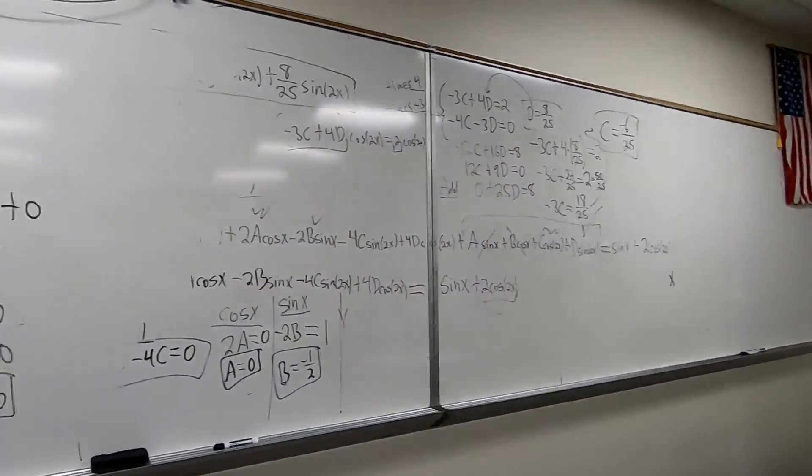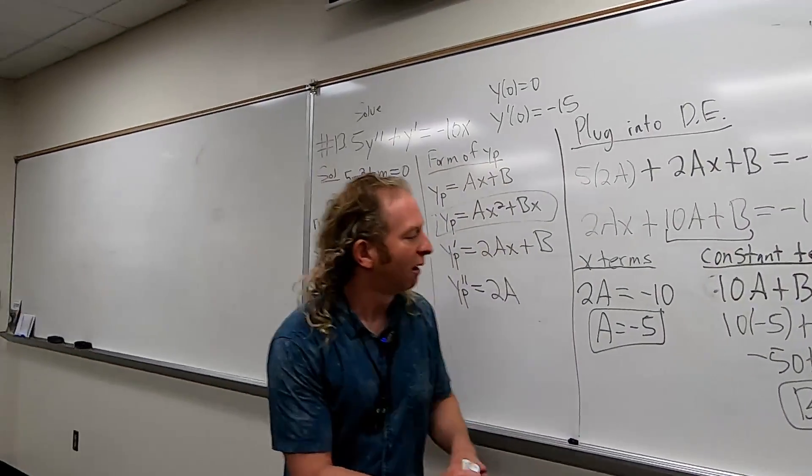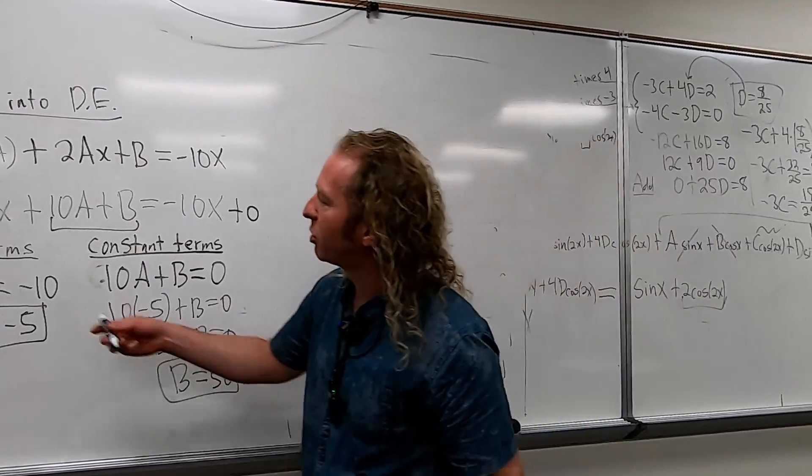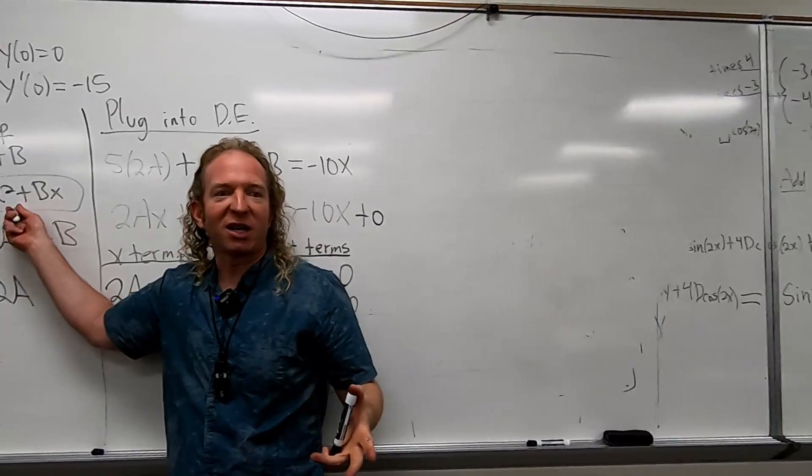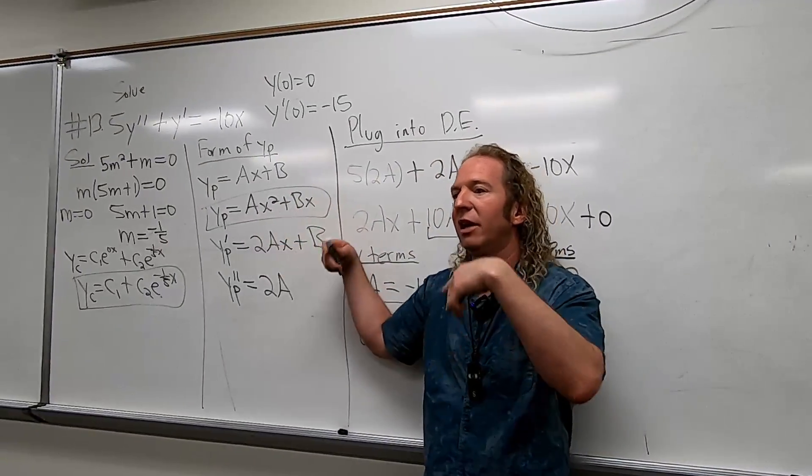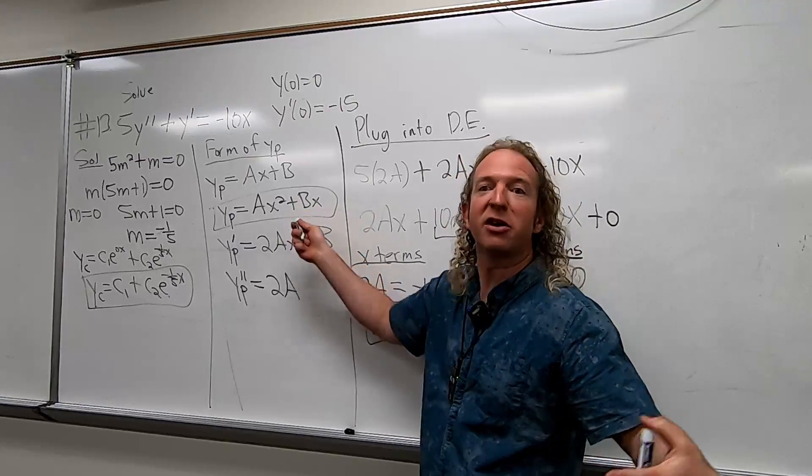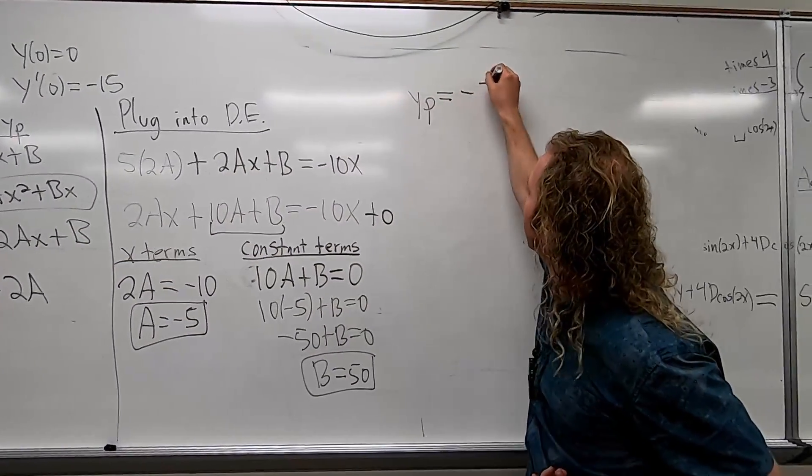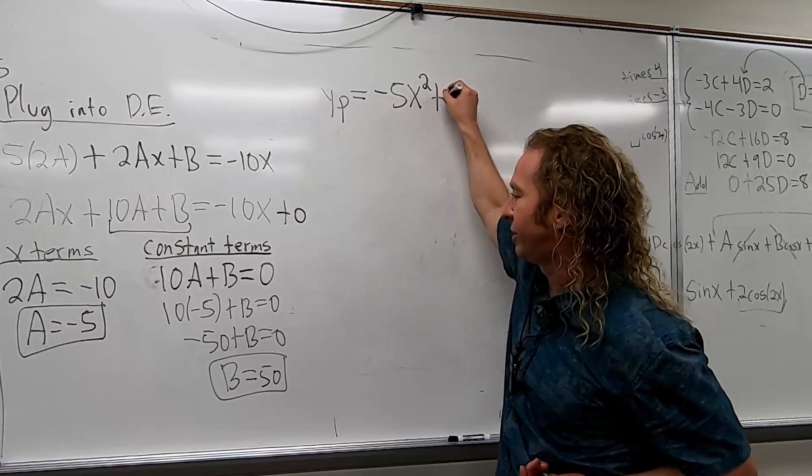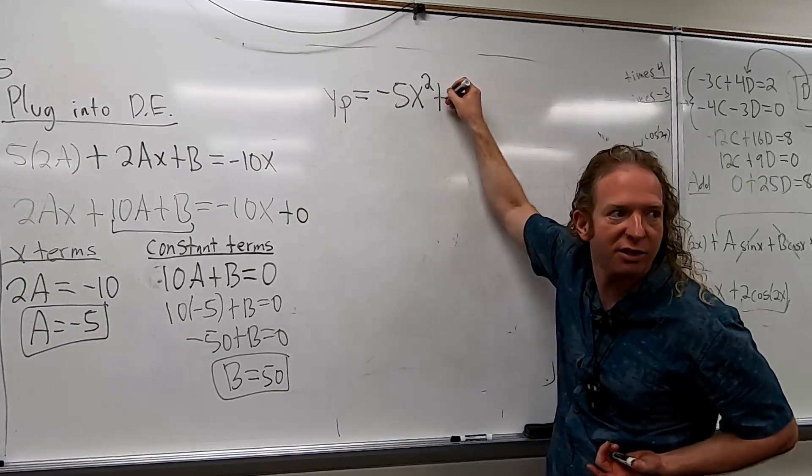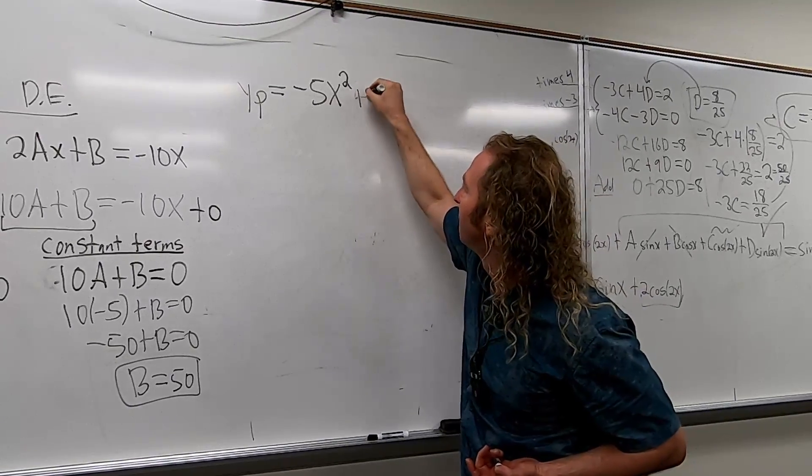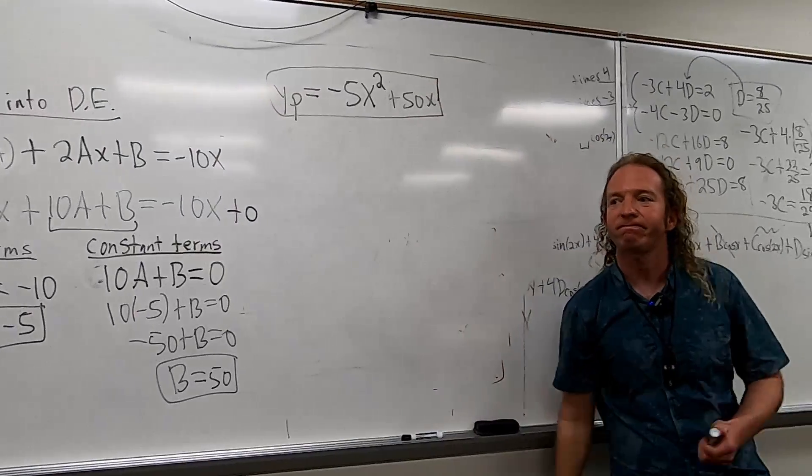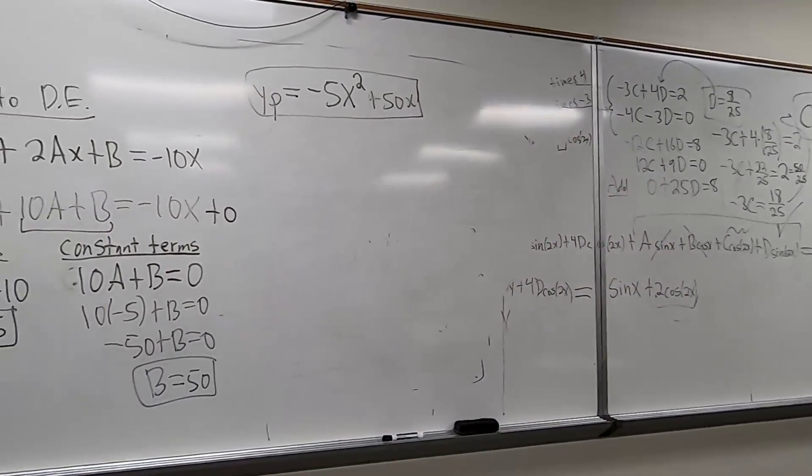So, yeah, we're almost done. We're getting there. So now we're going to plug these back into YP. So we're going to plug the A and the B into YP, which is over here. Thank God it's in a box, right? So the really benefit of putting things in boxes is that like it helps you do the problem. It helps me. Like I knew to look there because there was a box. So YP is going to be negative 5X squared plus 50X. I'm going to put that in a box as well. It's an accomplishment.